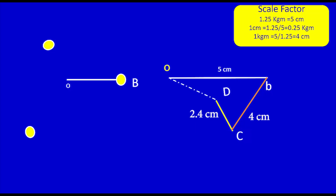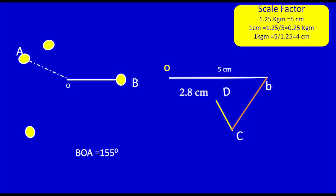I connect D to O in the force polygon diagram, which gives the direction of mass A. I move the dotted line to the angular diagram and mark it as A. Measuring angle BOA gives 155 degrees. The length of the dotted line in the force polygon is 2.8 cm, which equals 0.1·M_A from the table. Since 1 cm = 0.25 kg·m, I get 0.1·M_A = 0.7 kg, therefore M_A = 7 kg. The orientation of mass A is 155 degrees from plane B.